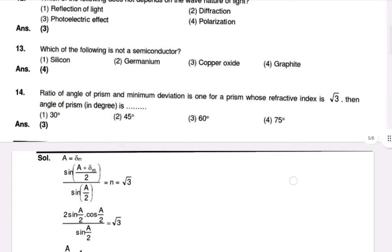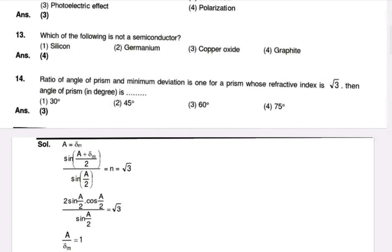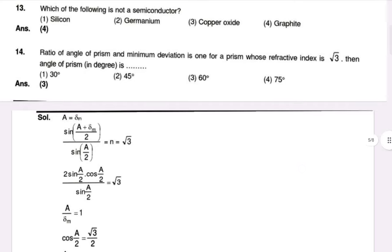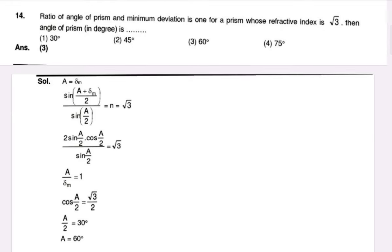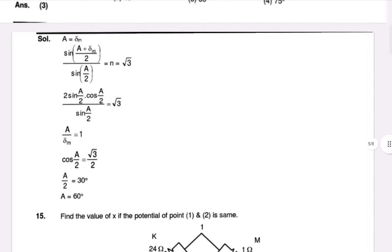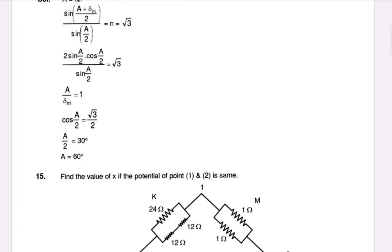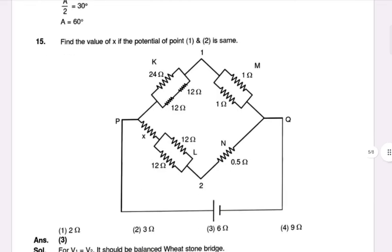The ratio of the angle of prism to minimum deviation: the minimum deviation is such that for a prism whose refractive index is root over 3, we find the angle of prism using sin((A + delta_m)/2) divided by sin(A/2) equal to n equal to root over 3. So 2 sin(A/2) cos(A/2) by sin(A/2) equals root over 3, giving cos(A/2) equal to root 3 by 2, which means A equals 60 degrees.